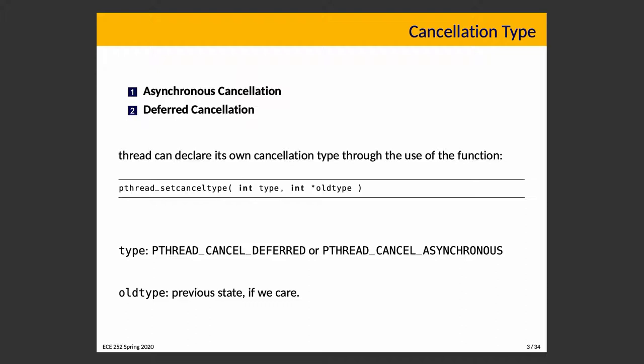Deferred cancellation, however, is when one thread informs the other that it has been canceled, and the target is actually responsible for checking that and then cleaning itself up. The polite way is advantageous — it allows you to clean something up if this is the thread that's going to die: close a file that you have open, deallocate memory that you have allocated, that sort of thing.